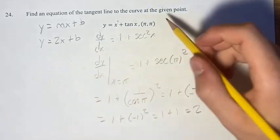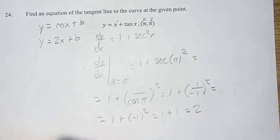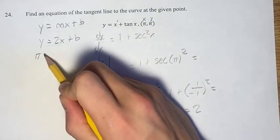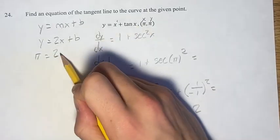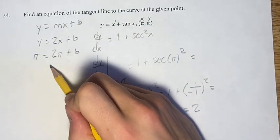How do we find b? Well, we have a value of x and a value of y that fit this equation. So, we plug in pi for y, equals 2 times x, plug in pi for that. We've now plugged in this point, and we can solve for b.